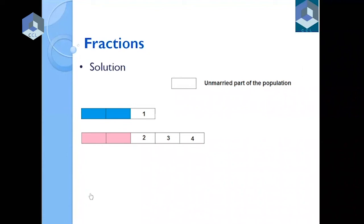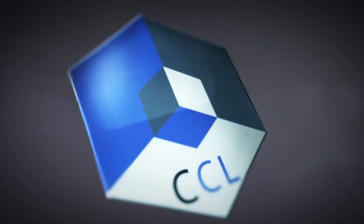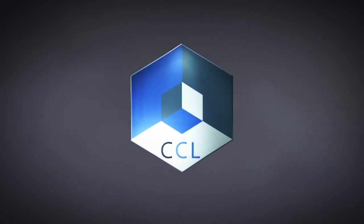So the unmarried part consists of four parts out of the total eight parts of the population. My answer is 4/8, which means half of the total population is unmarried.